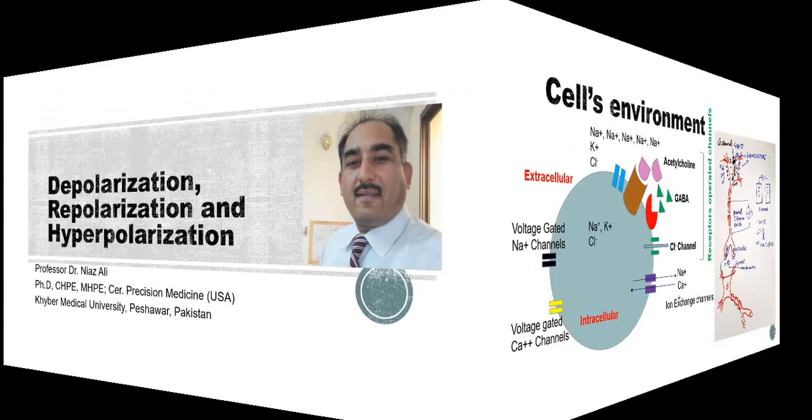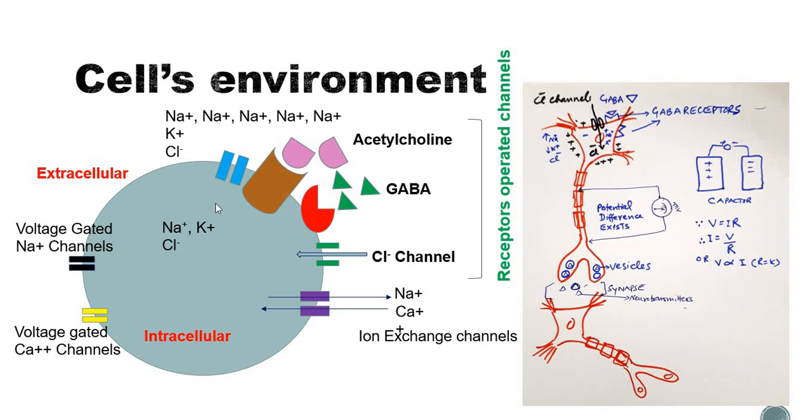You understand that cells have a certain environment. If I represent this as a nerve cell, there is a neuron, there may be nerve-to-nerve junction and nerve-to-effector organ junction. This extracellular environment and intracellular environment, extracellularly the sodium ion concentration is high and intracellularly the potassium ion concentration is high. The chloride ion exists both inside and outside like sodium and potassium.